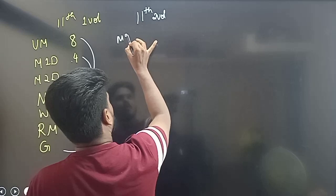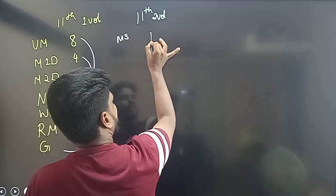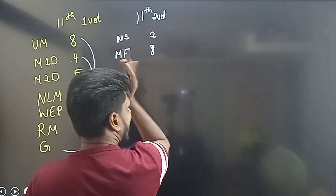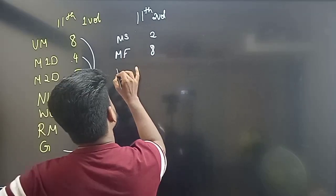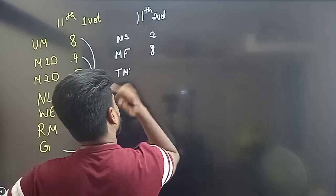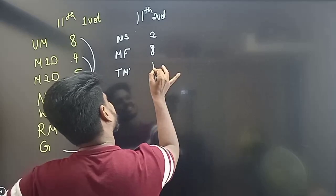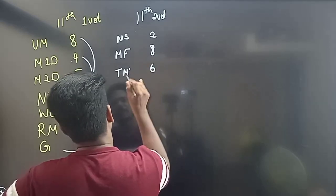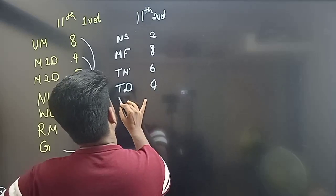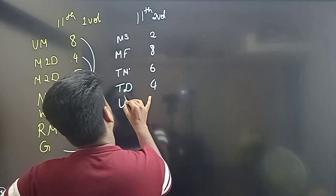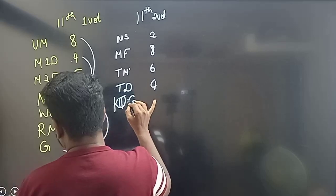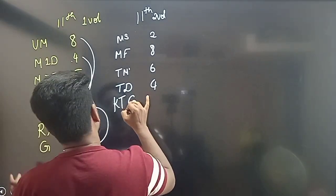Mechanical property of solid: 2 lectures. Mechanical property of fluid: 8 lectures maximum. Thermal property of matter: 6 lectures maximum. Thermodynamics: 4 to 5 lectures. Kinetic theory of gases (KTG): 2 lectures.